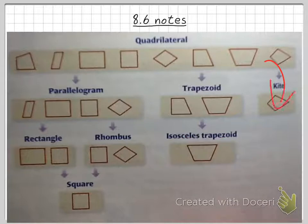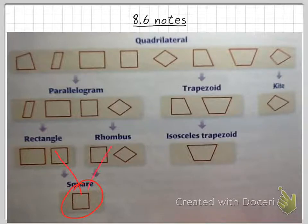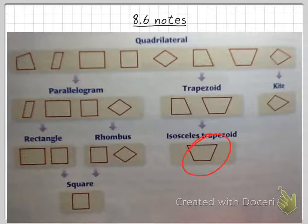Finally, we have the third column: a kite. A kite is a quadrilateral that has two pairs of consecutive congruent sides, but the opposite sides are not congruent. So this goes from general to specific: all squares are rectangles and rhombuses, all rectangles and rhombuses are parallelograms, all parallelograms are quadrilaterals, all isosceles trapezoids are trapezoids, all trapezoids are quadrilaterals, and all kites are quadrilaterals.